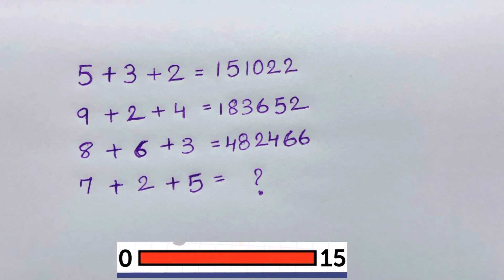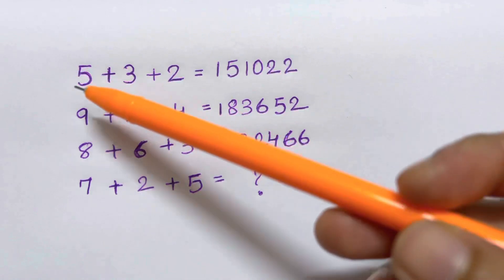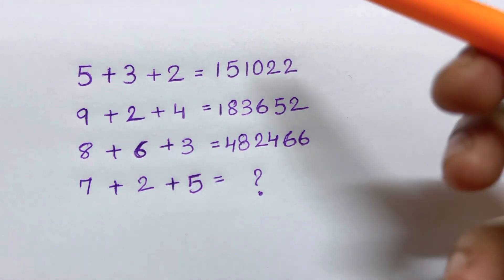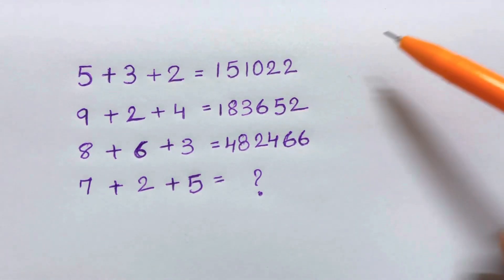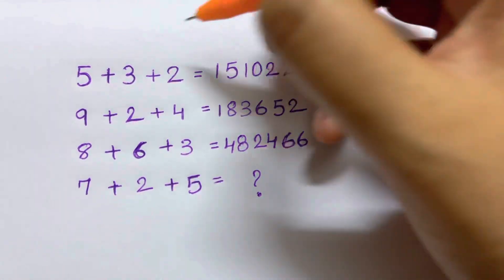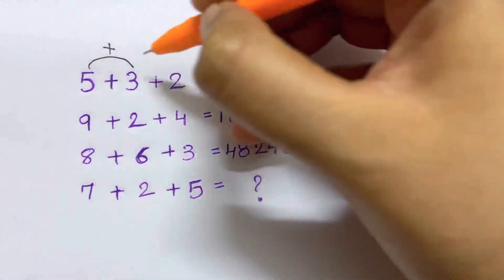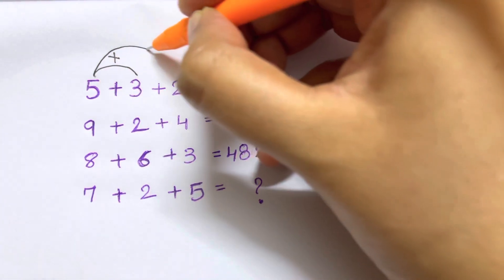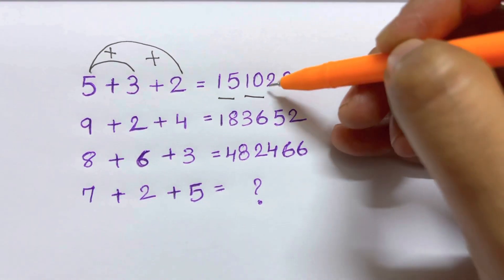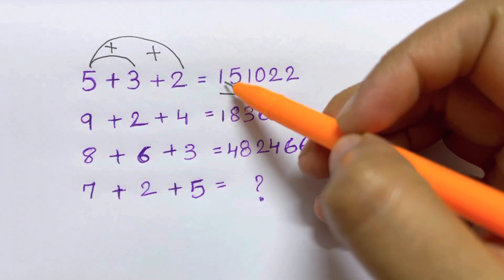Okay, so I'm going to show you the solution for this question. It says 5+3+2 equals a six-digit number, so what logic I can make is 15, 10, and 22. What I can think of in mind is just multiplying 5 times 3 to give me 15, and then I'm going to multiply 5 times 2, that's going to give me 10. And how should I get 22?